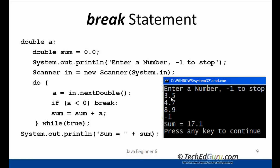In this example as shown here, I entered three numbers 3.5, 4.7, 8.9 and when I entered minus 1, it terminated the loop. It gave me the sum of the numbers I had entered before entering minus 1.